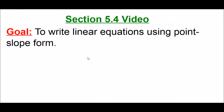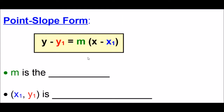In this video, I'm going to be discussing how to write linear equations using point-slope form. First I want to introduce what point-slope form is. This is the general formula: y minus y1 equals m times x minus x1. Basically, this is just a different way to write the equation of a line — it's similar to y equals mx plus b, just a different format.